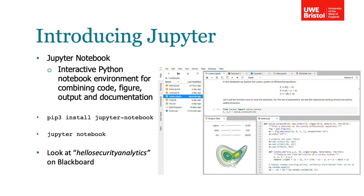Python has grown in popularity significantly over the last 10 years. There are a number of reasons for this, such as the ability to use the REPL command line — Read, Evaluate, Print, Loop — which links well with our view of iterative practice for data science. The wealth of libraries developed for Python means that many tasks can be performed quickly, rather than coding from scratch. In particular, for data science there are a number of libraries seen as the standard.